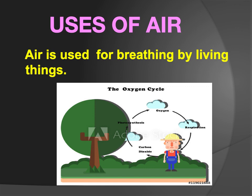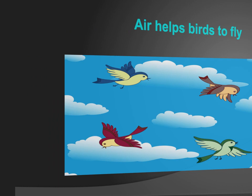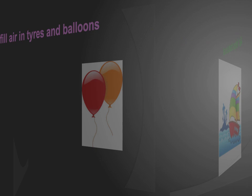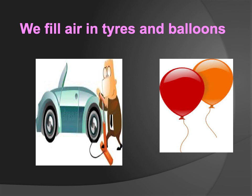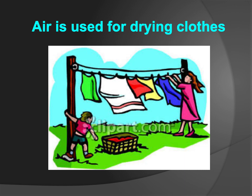Now let's learn about some of the uses of AIR. AIR is used for breathing by living things. All living things, whether humans or animals, they need AIR to breathe. Air also helps birds to fly high in the sky. Air helps boats to sail. We fill air in tires and balloons. Air is used for drying clothes — whenever there is wind or air, the clothes dry easily.